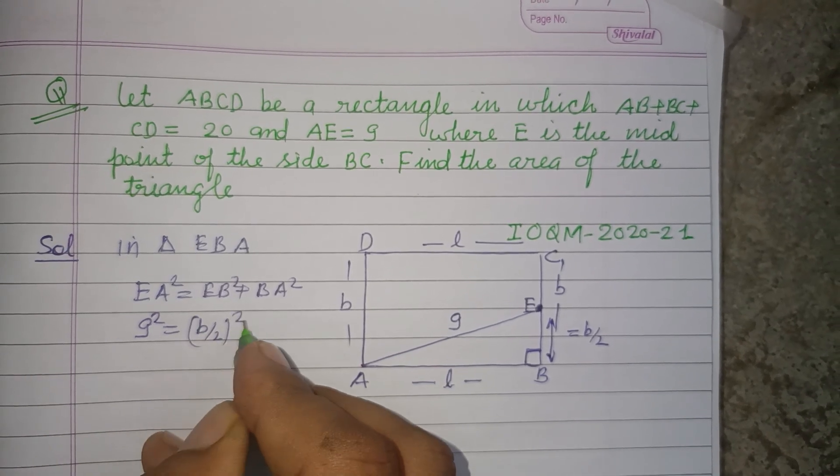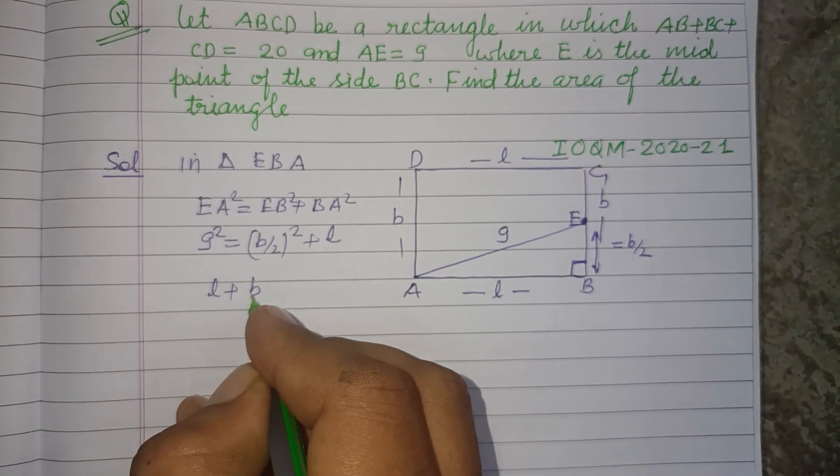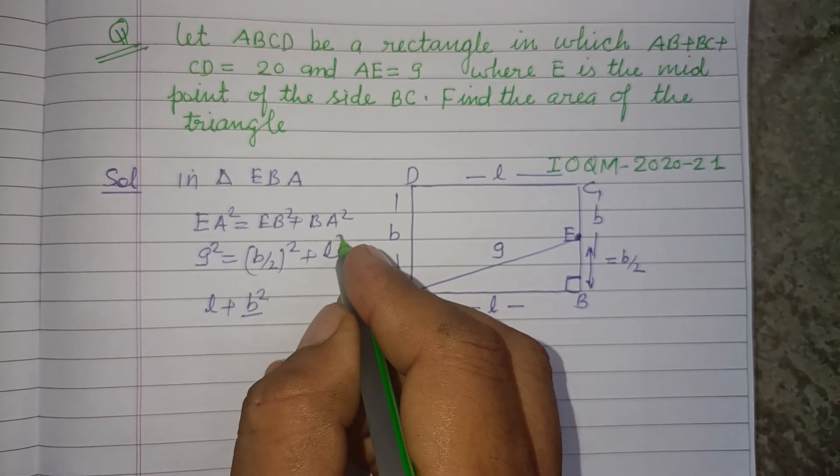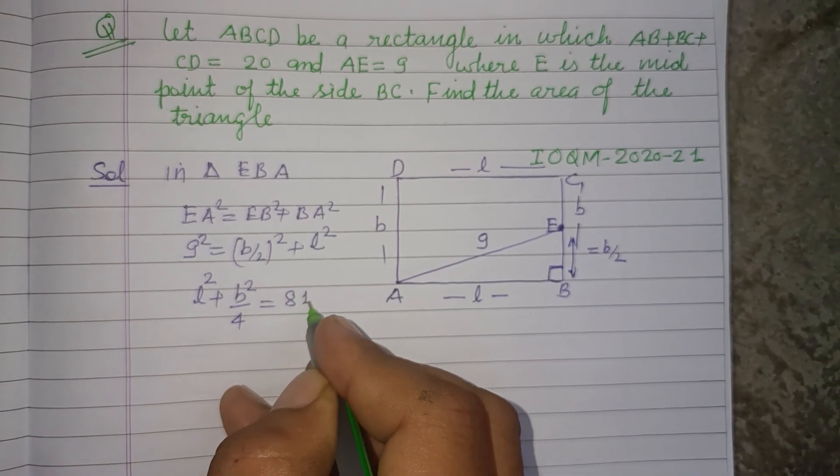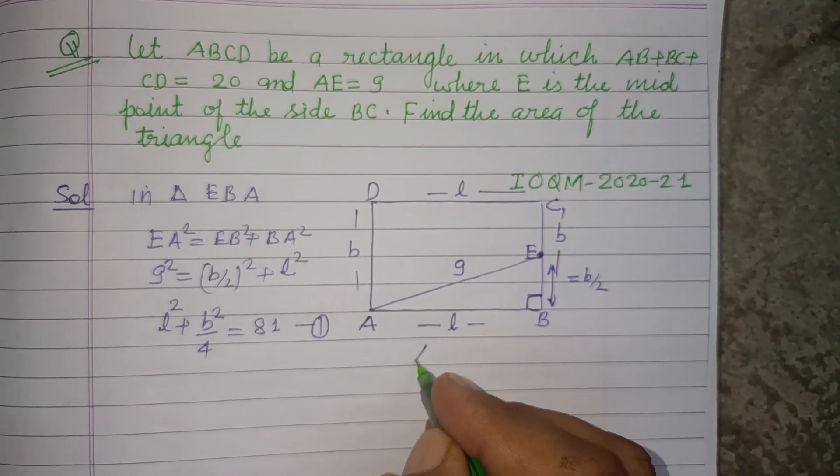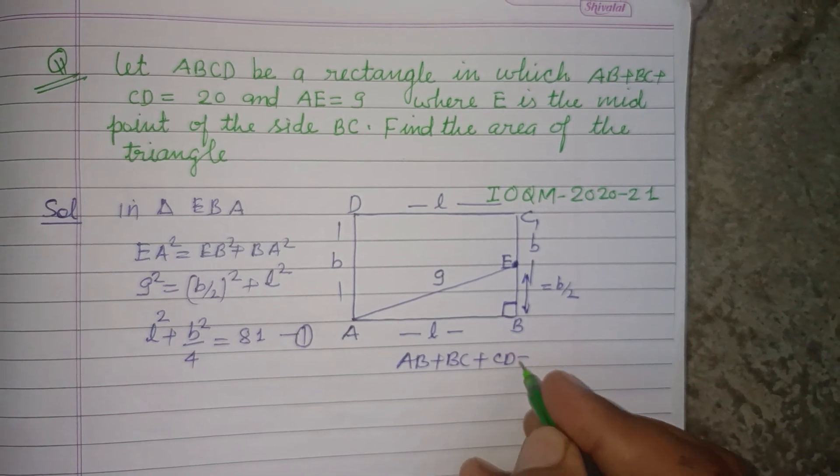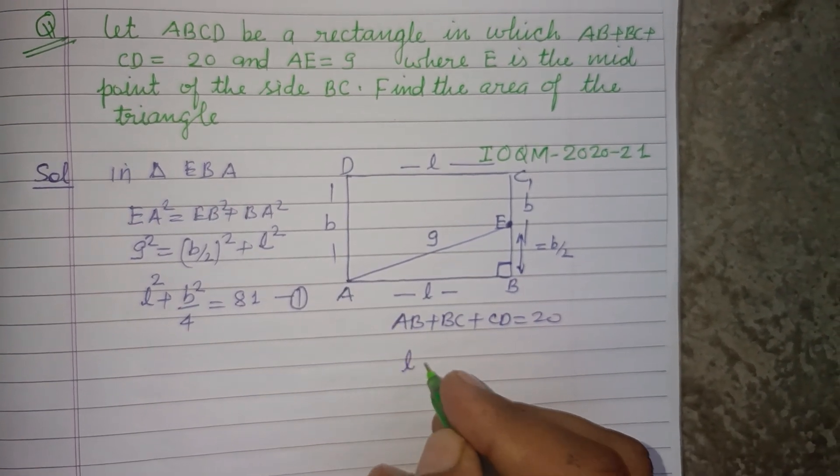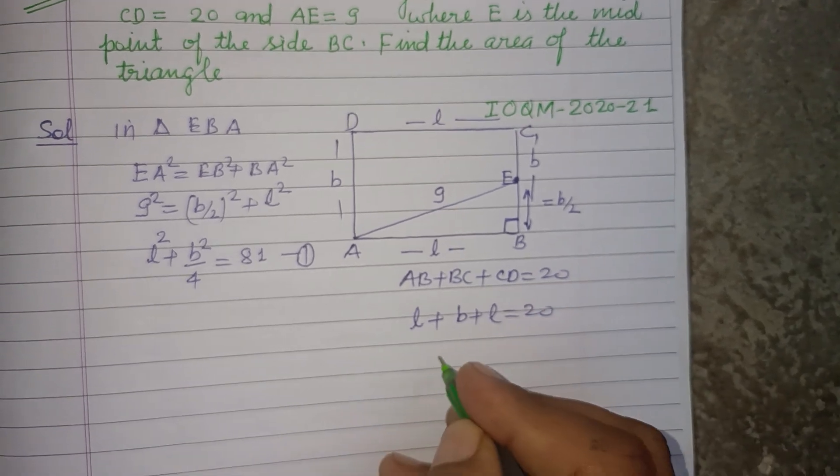(b/2)² plus l². So l² + b²/4 = 81. This is our first equation. It is also given that AB+BC+CD=20. AB is l, BC is b, and CD is l, so 2l+b=20.